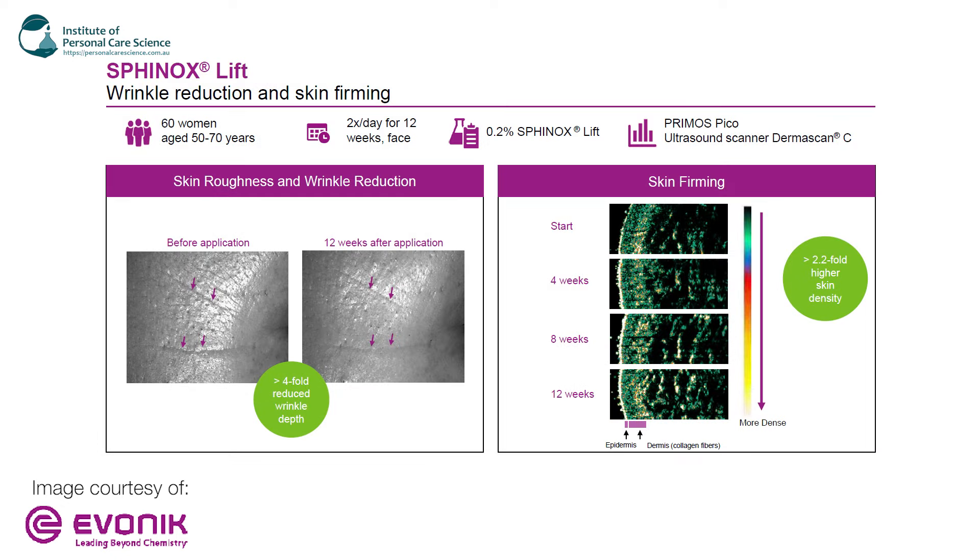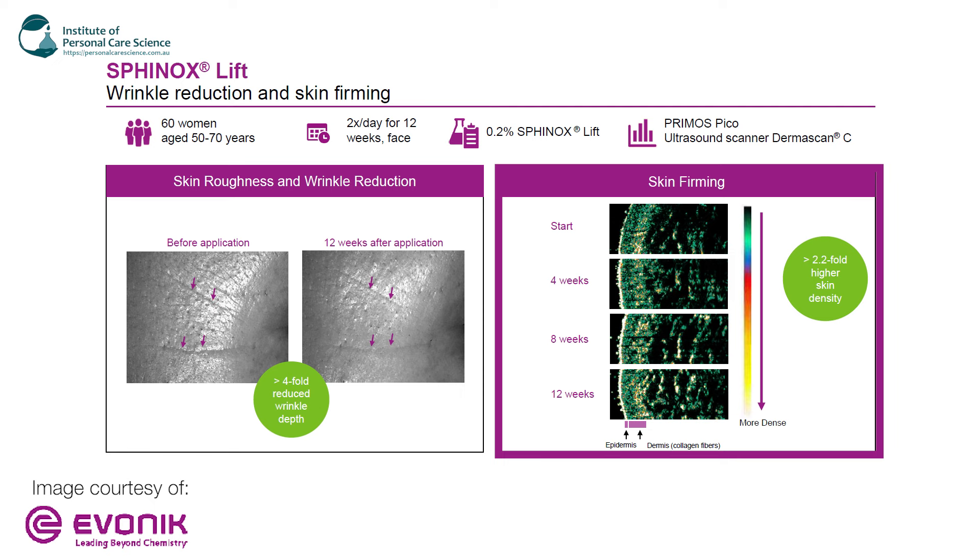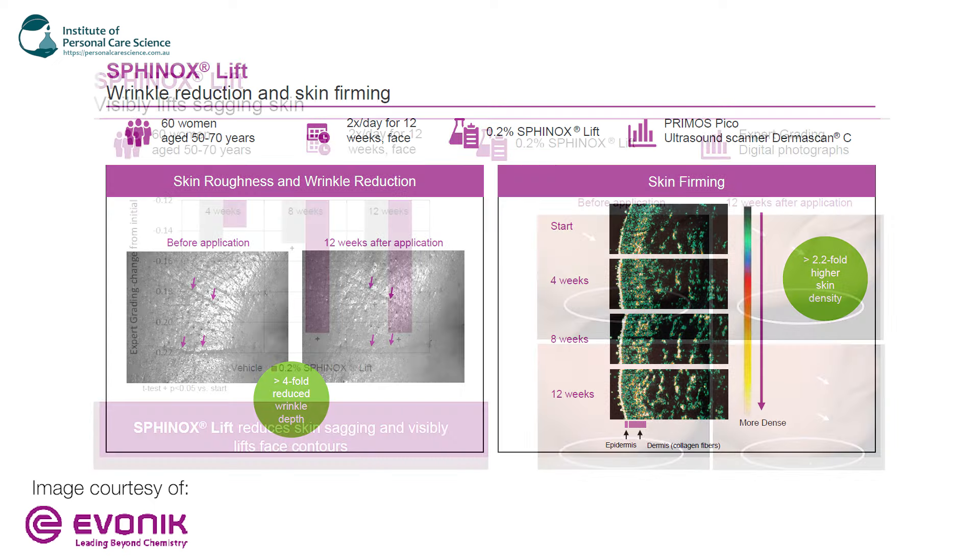So you can see here in these two graphs there was some testing done on 60 women aged between 50 and 70. They applied the product with the active in it two days a week for 12 weeks on the face using the 0.2 percent of the active. And you can see here the results. There's a before and after application. So before and 12 weeks later you can see there's a four-fold reduce in the wrinkle depths of the skin. And you can also see here the skin firming. So it's got a 2.2 fold higher skin density in the second photo here.